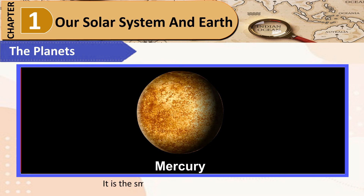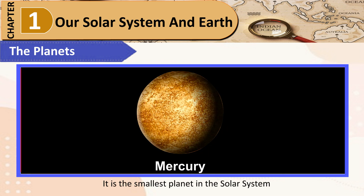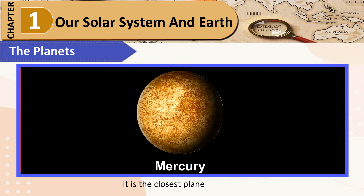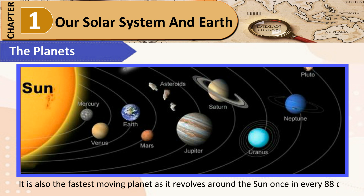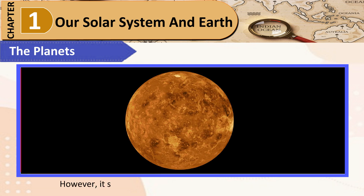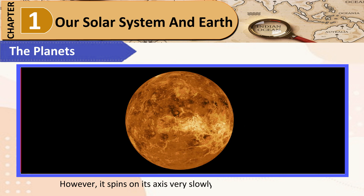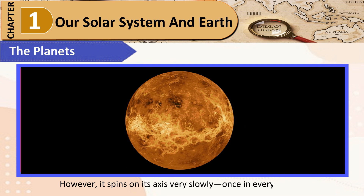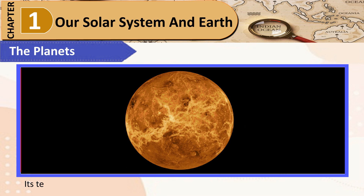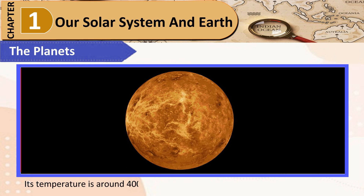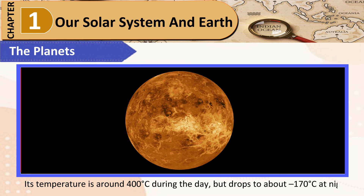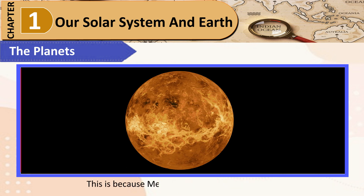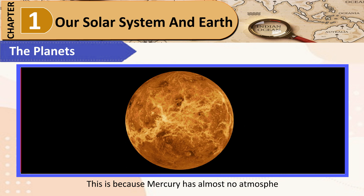Mercury: It is the smallest planet in the solar system and the closest planet to the Sun. It is also the fastest moving planet, revolving around the Sun once in every 88 days. However, it spins on its axis very slowly — once in every 58.6 days. Its temperature is around 400 degrees Celsius during the day but drops to about minus 170 degrees Celsius at night, because Mercury has almost no atmosphere.